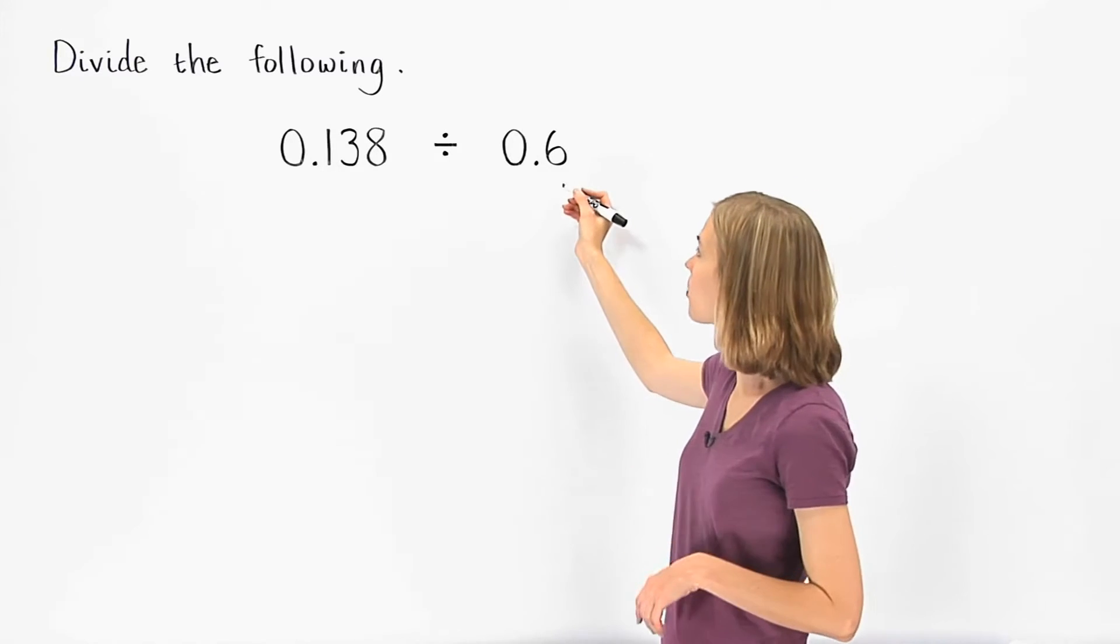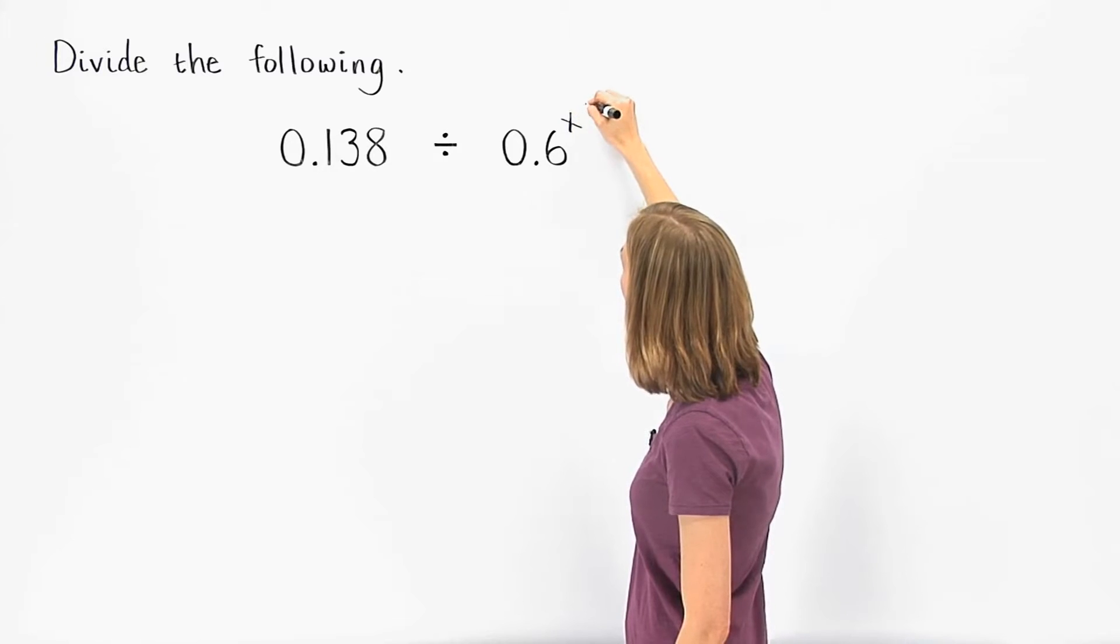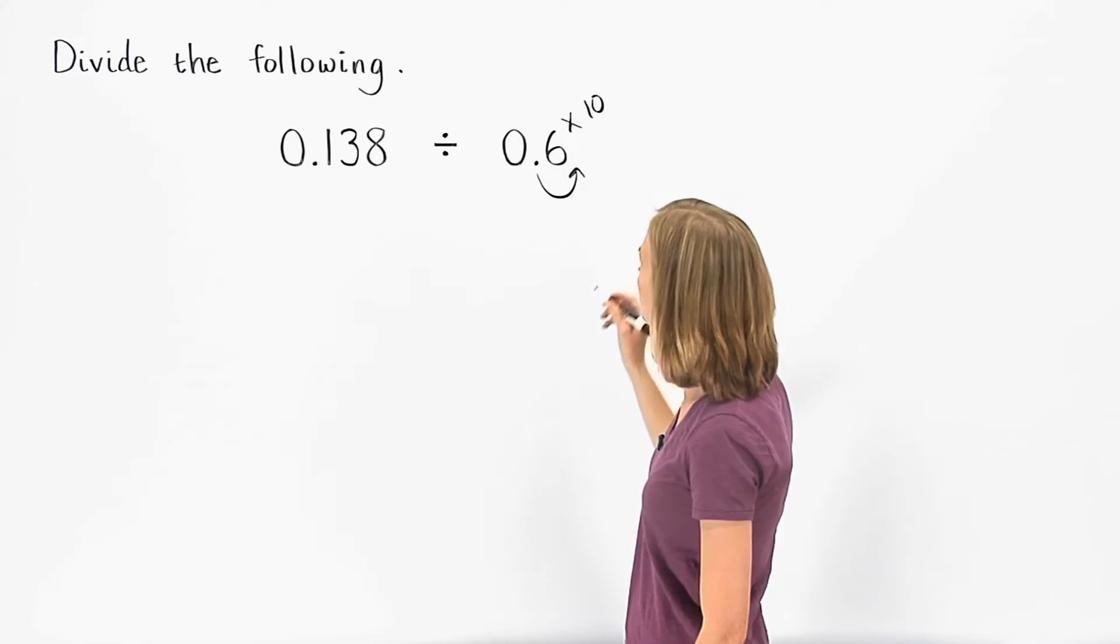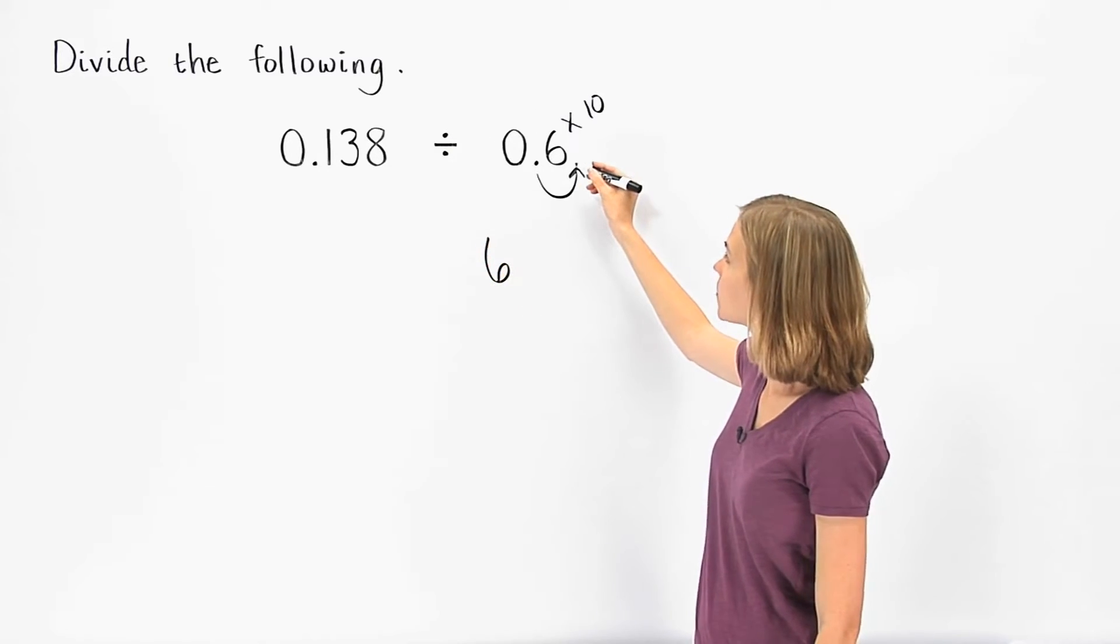let's first change 0.6 to a whole number by multiplying by 10. This moves the decimal point one place to the right, giving us 6. If we multiply 0.6 by 10,